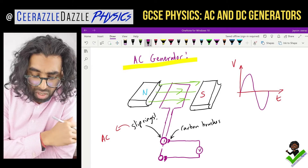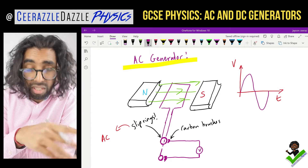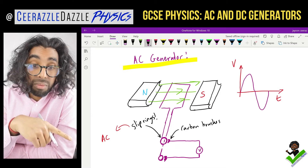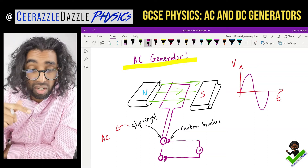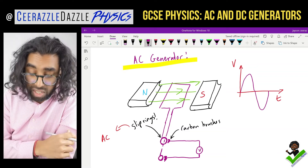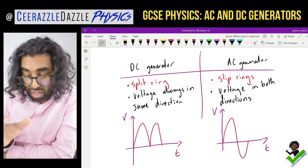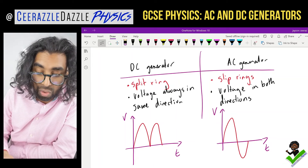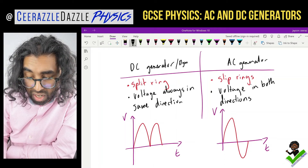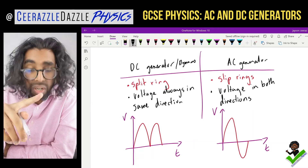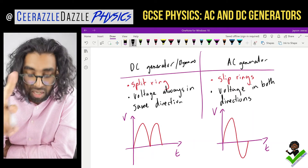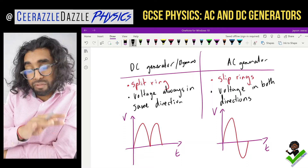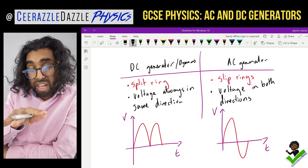A common point of confusion: slip rings and split rings look roughly the same, and some students confuse these generators with the DC motor — but remember, both of these are generators. Quick summary: the DC generator (dynamo) uses a split ring and the voltage is always in the same direction. The AC generator uses a slip ring and the voltage switches direction every half turn.